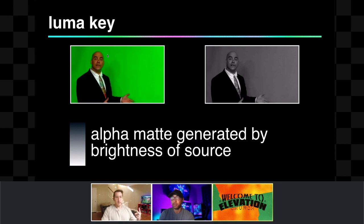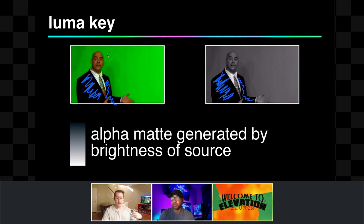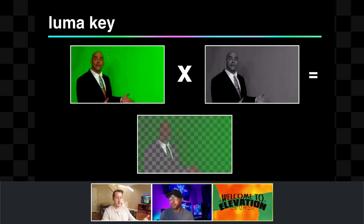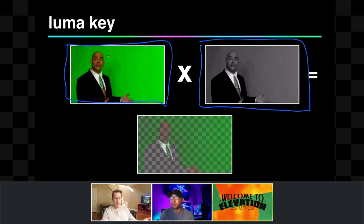Then we have a luma key, which generates the alpha mat based on the brightness of the fill. For instance, if a guy is wearing a black jacket, that's darker and will generate a transparent area, while his white shirt will be fully opaque. You end up with a result where his jacket is fully transparent and his shirt is fully opaque — that's the idea of a luma key.